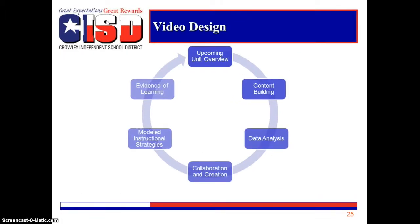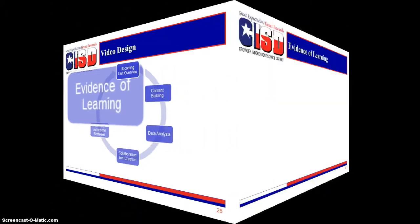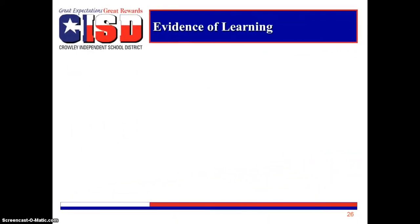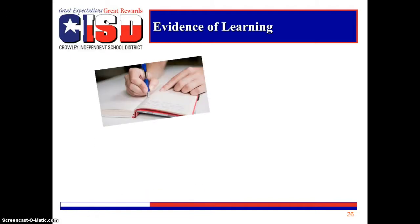The final and sixth component is evidence of learning. Since our focus is to ensure students learn, their evidence of learning should directly align with the rigor of the standard and appropriate cognitive level of thinking. The evidence of learning can be simple or complex according to the standard and can include products such as various modes of writing, such as a quick write, reflection, journal entry, or a formal paper.